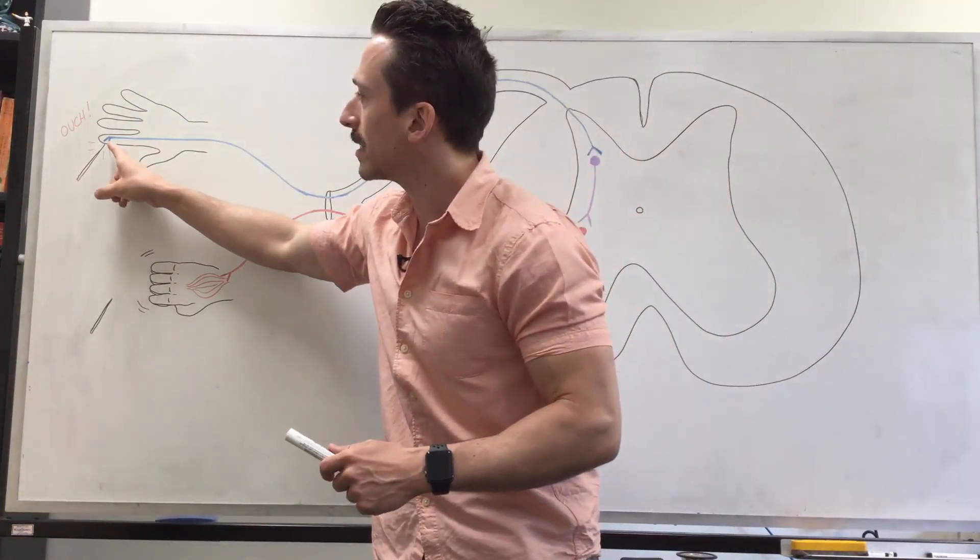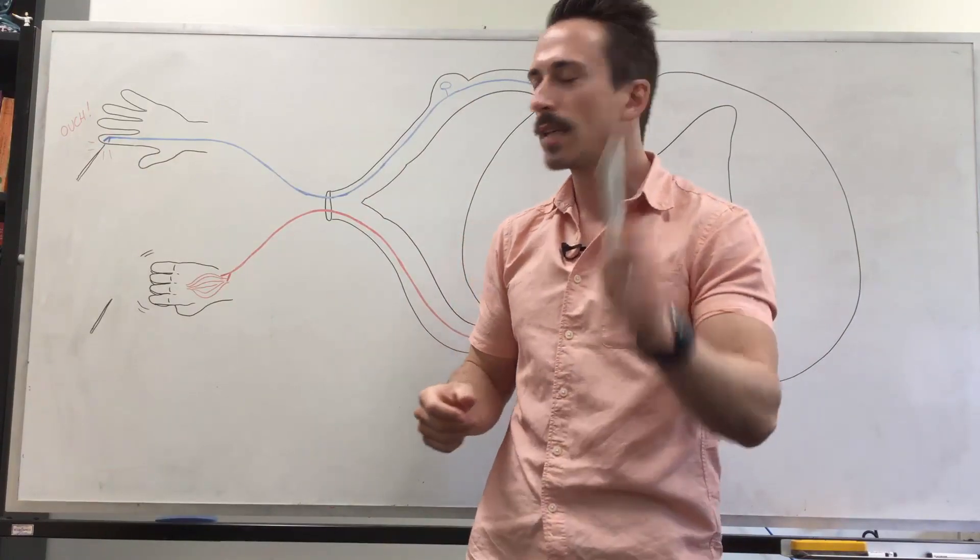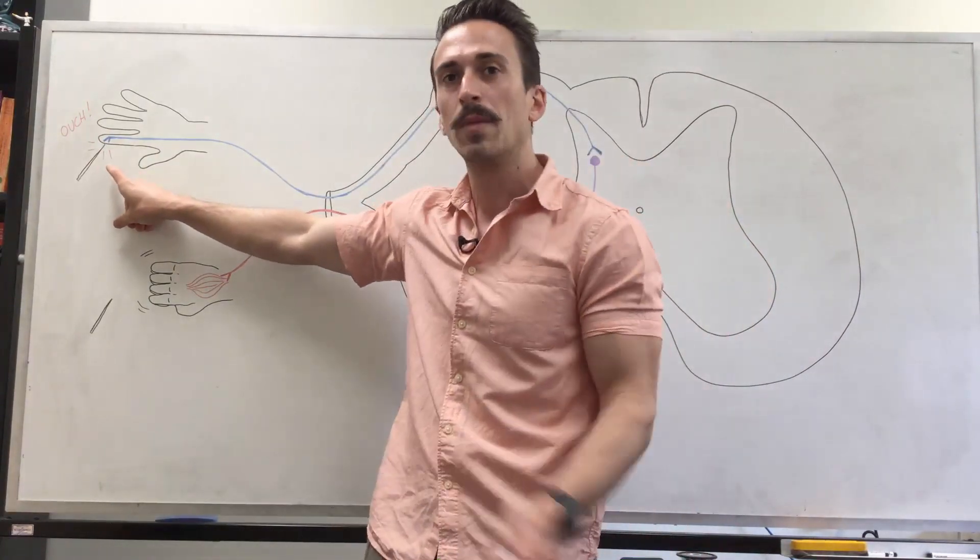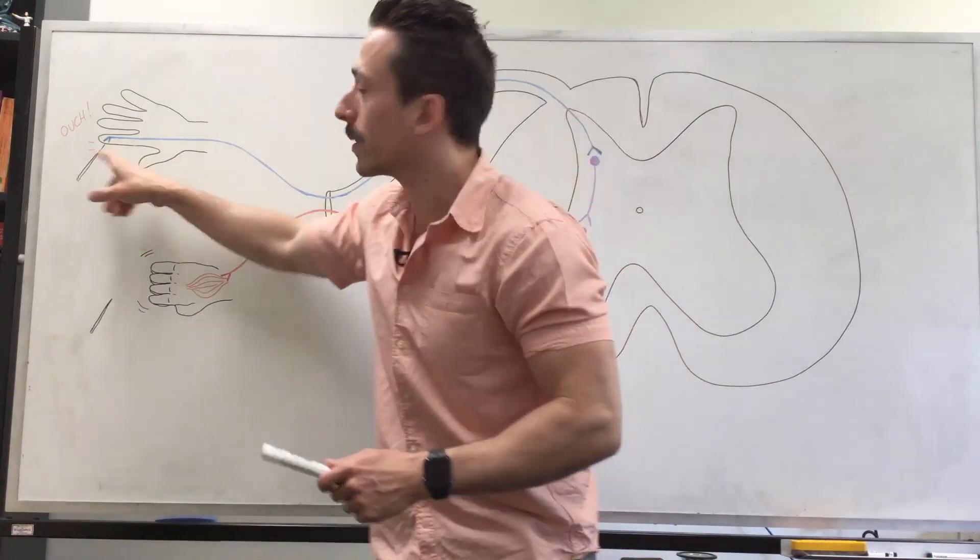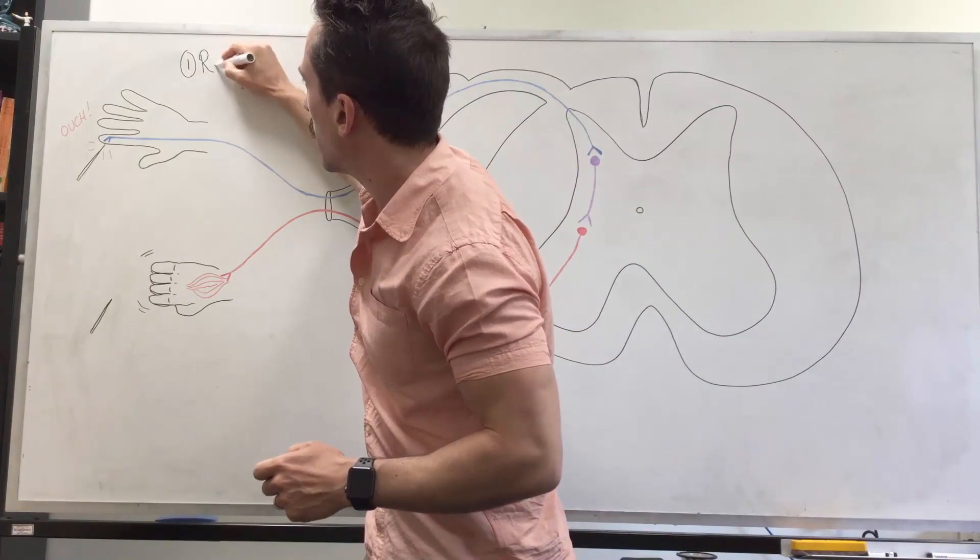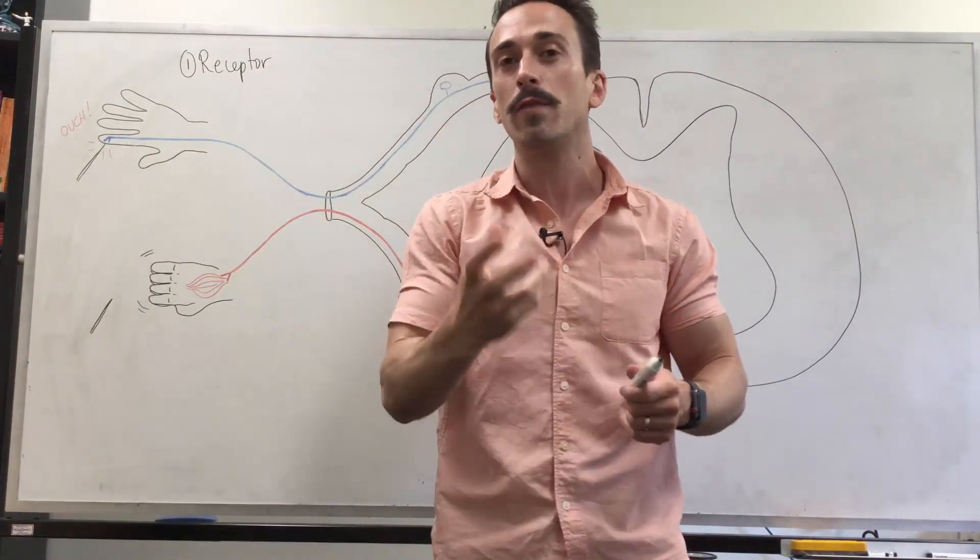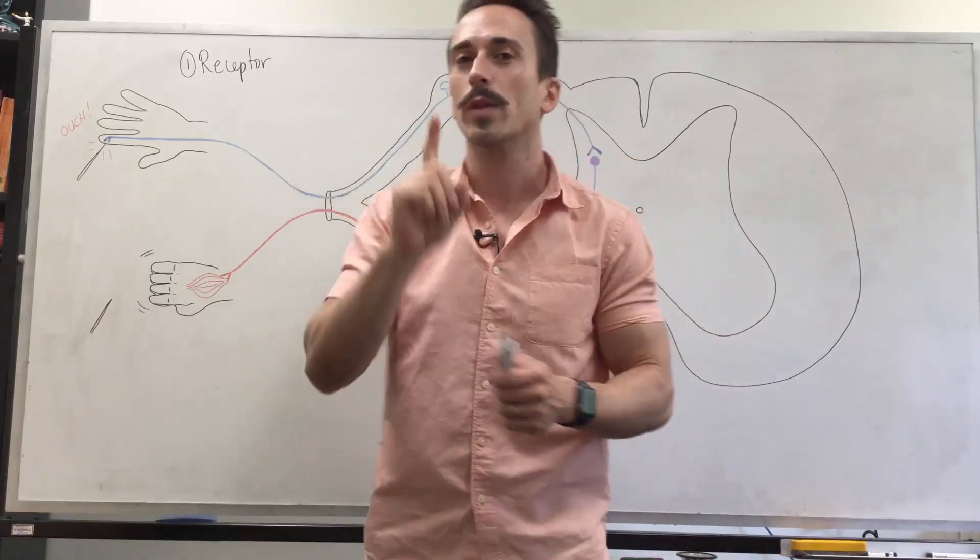Now what this needle has done is stimulated a receptor in the hand, and this receptor takes this mechanical energy and transduces it into electrical energy. That's the first component of the reflex arc: the receptor. It takes mechanical energy or some form of energy and transduces it into electrical energy.